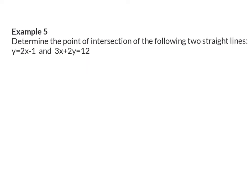Example 5. Determine the point of intersection of the following two straight lines: y is equal to 2x minus 1, and 3x plus 2y is equal to 12. Point of intersection means that we are looking for a coordinate — an x and a y value — that lies on both of these straight lines. You were taught two different methods in grade 10: you could choose to either use substitution or elimination. In our case, our one equation is already in standard form, and that means that we can immediately substitute that into y's place in the second equation.